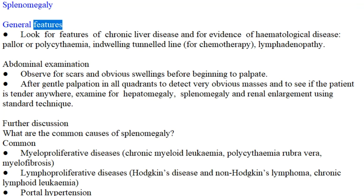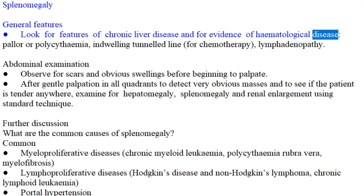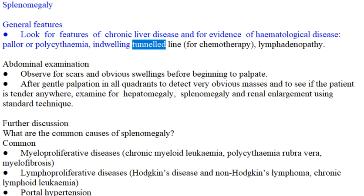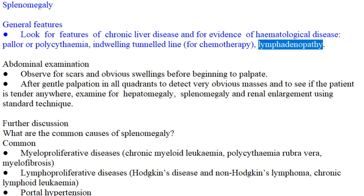General Features: Look for features of chronic liver disease and for evidence of hematological disease, pallor or polycythemia, in-dwelling tunneled line for chemotherapy, and lymphadenopathy.